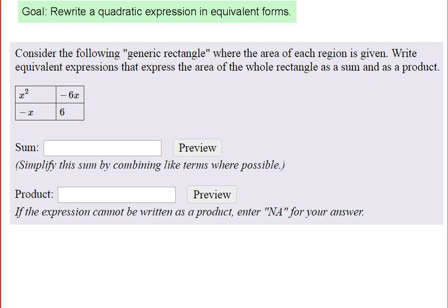So here is an example of our generic rectangle right here. We're thinking about the area of this rectangle. So right now, the rectangle is broken into four regions, and we're looking at the overall area.